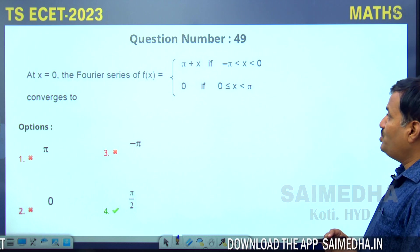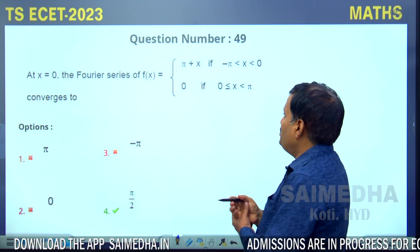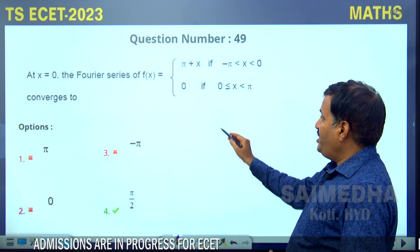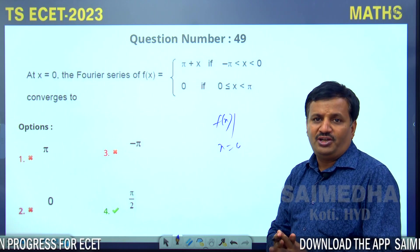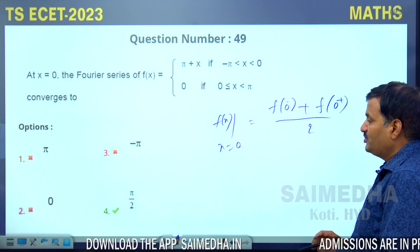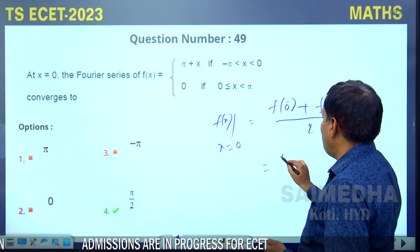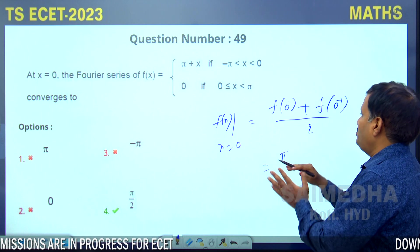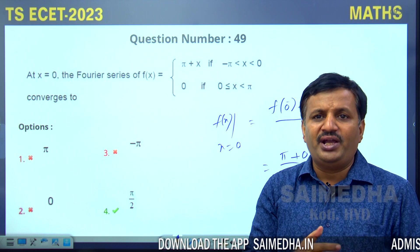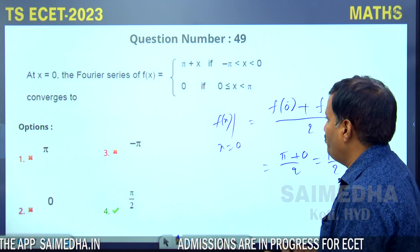At x = 0 the Fourier series of f(x) = (π+x) for -π < x < 0, and f(x) = 0 for 0 ≤ x < π converges to the average of the left and right limits: [f(0⁻) + f(0⁺)]/2 = [(π+0) + 0]/2 = π/2. Option 4 is correct.